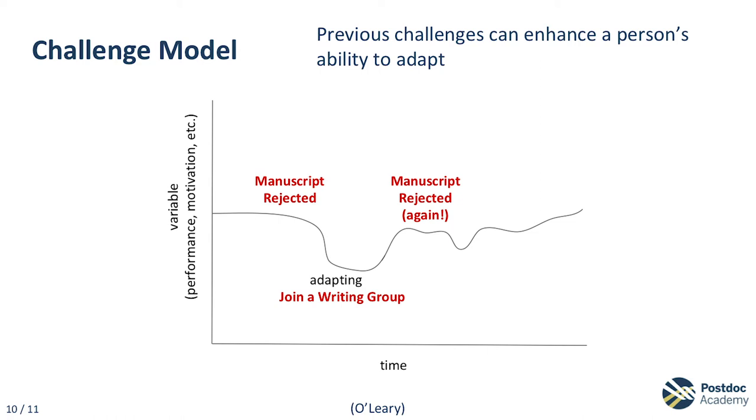Maybe the postdoc whose manuscript was rejected worked through the edits, revised and resubmitted. Unfortunately, the manuscript gets rejected a second time. I can see this going in a couple of directions. A second rejection could add more stress and the postdoc feels even worse. Or maybe the second round of comments shows them that their manuscript is getting stronger and it's almost ready to publish. So when the postdoc recognizes their own progress, the rejection may feel less personal and the next round of revisions are a little bit easier. The challenge model is kind of a 'what doesn't kill us makes us stronger' model.